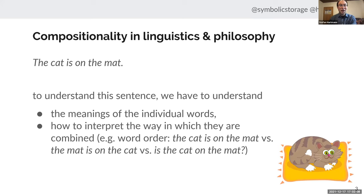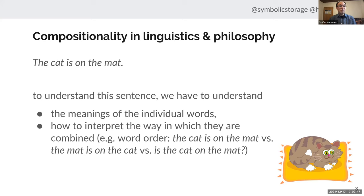I will start by talking about the concept of compositionality. If we hear a sentence like 'the cat is on the mat,' to understand the sentence we have to understand the meanings of the individual words, but also the way in which they are combined. That's basically the principle of compositionality proposed in philosophy of language. Because 'the cat is on the mat' means something different than 'the mat is on the cat' or 'is the cat on the mat?' — structural features like word order play a role when we interpret composite utterances.